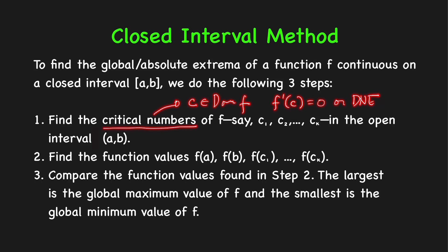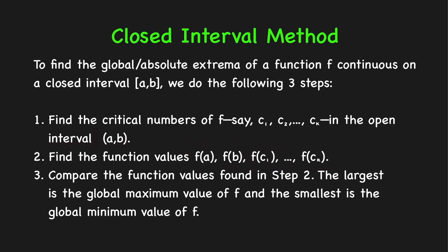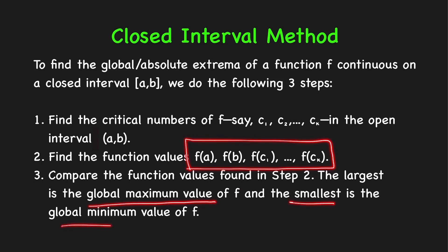Keep in mind that we are only considering critical numbers that are in the open interval (a, b). Second, we find the function values at the endpoints, f(a) and f(b), and the function values at the critical numbers in the open interval (a, b). The last step is to compare all the function values found in step 2. The largest of these is the global maximum value, and the smallest is the global minimum value of f.